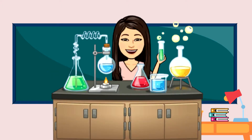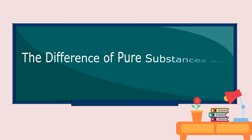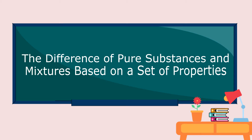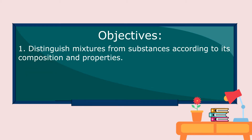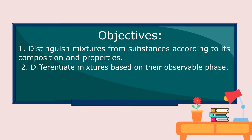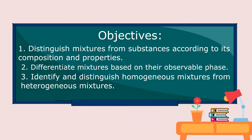Today, we will discuss the difference of pure substances and mixtures based on a set of properties. Our objectives are: 1. Distinguish mixtures from substances according to its composition and properties. 2. Differentiate mixtures based on their observable phase. 3. Identify and distinguish homogeneous mixtures from heterogeneous mixtures.